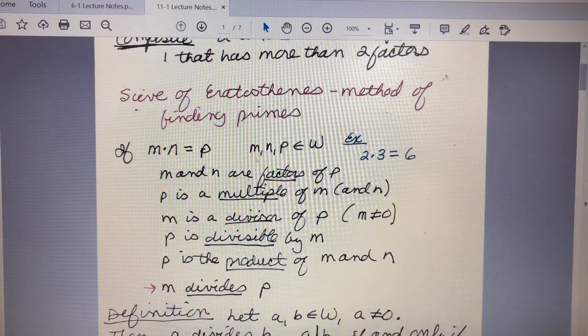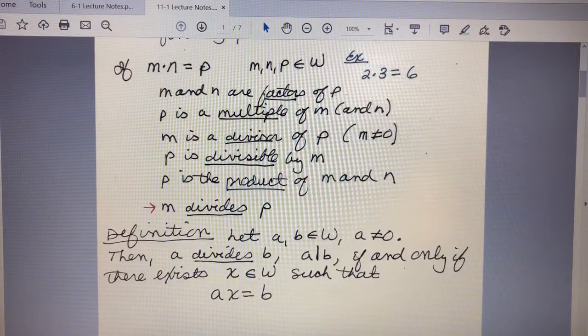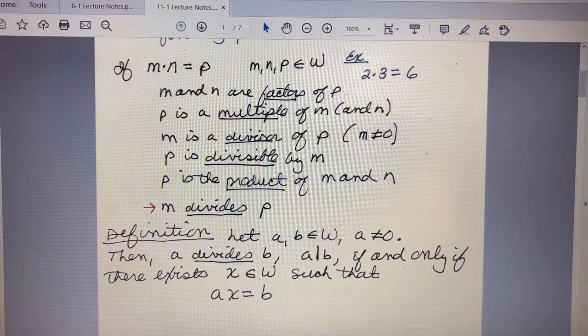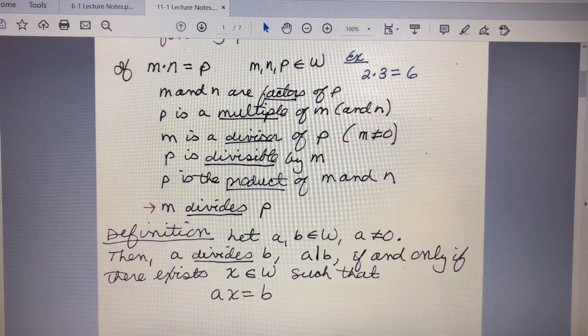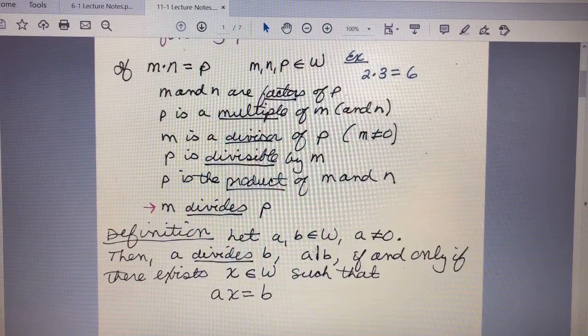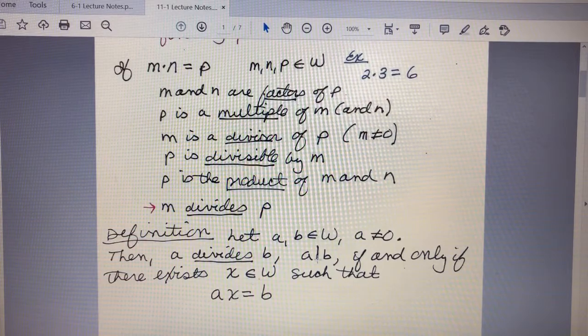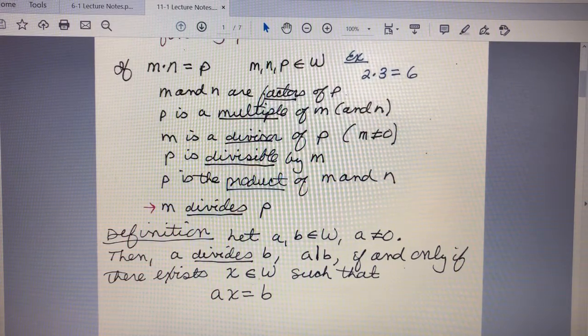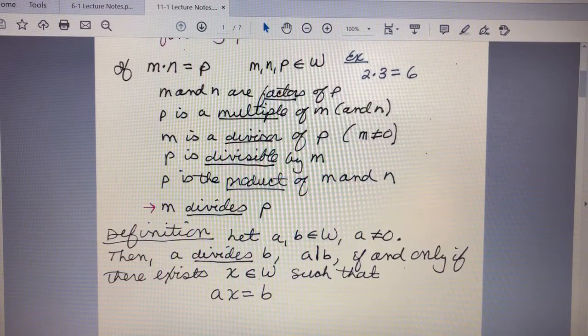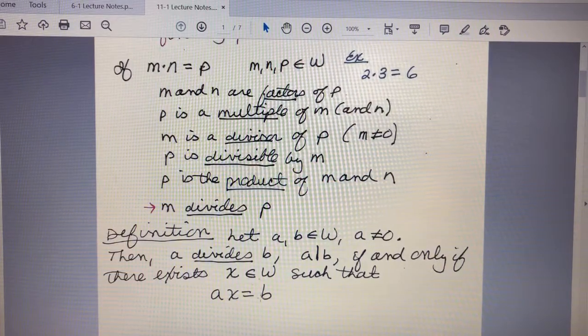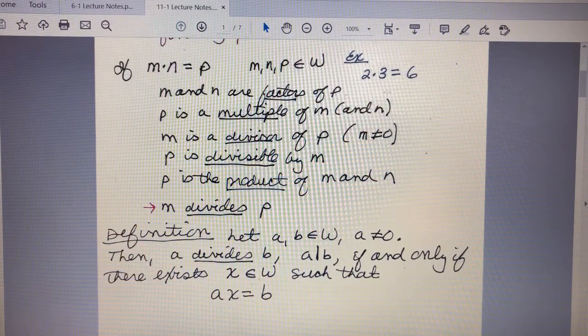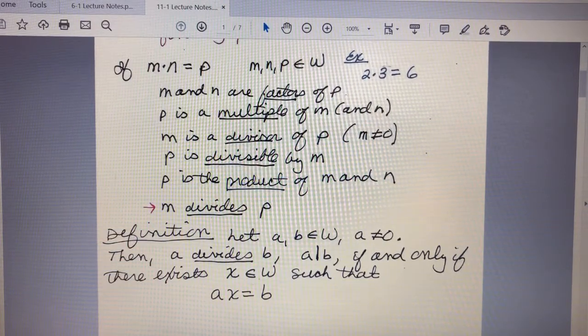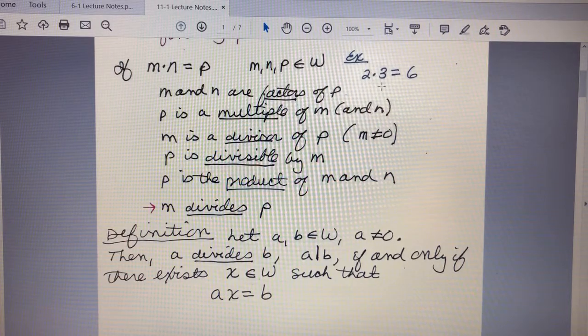Also, we would say m divides p, so 2 divides 6. All of that language is really important—we have to be precise with our language as teachers especially. Here's a definition: if a and b are both whole numbers, a is not 0, then a divides b—we write that divides using a straight vertical line—if and only if there exists some number x, also a whole number, such that a times x equals b. Again, using this example, 2 divides 6 because there exists the number 3 such that 2 times 3 equals 6.